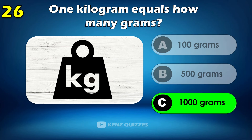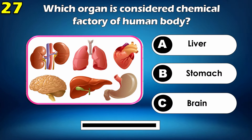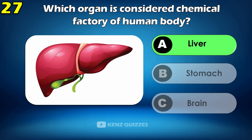1 kilogram equals how many grams? 1000 grams. Which organ is considered the chemical factory of the human body? Liver.